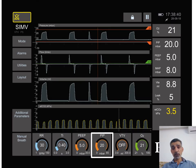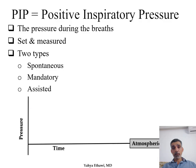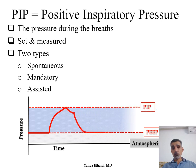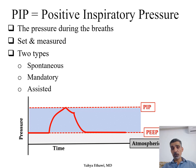The other parameter we should set is the PIP, the positive inspiratory pressure — it's the pressure needed during inspiration. There are three types of breath: the spontaneous, achieved by the baby; the mandatory, set by the machine; and the assisted, started by the baby and completed by the machine. You can see there is pressure through all the cycle, which we call the PEEP, and the PEEP is most important during expiration to keep the alveoli open.